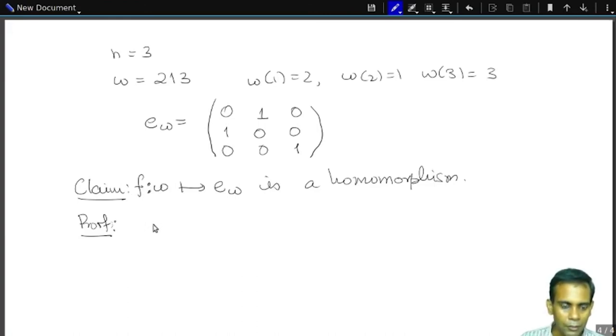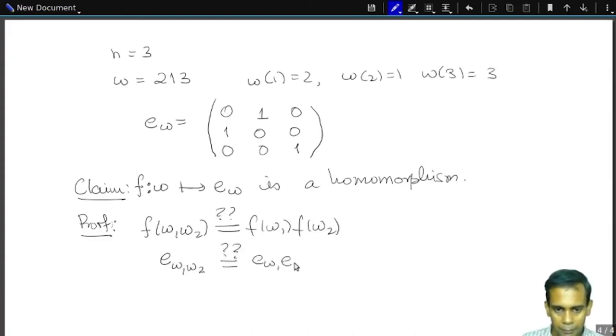So we need to show that F of ω_1, ω_2, so we need to show that this is F of ω_1, F of ω_2. Or in other words, E subscript ω_1, ω_2 is this equal to E_ω_1 multiplied by E_ω_2. Now, this E_ω_1 multiplied by E_ω_2 is an N by N matrix. And E_ω_1, ω_2 is also an N by N matrix. We want to know if these N by N matrices are equal.